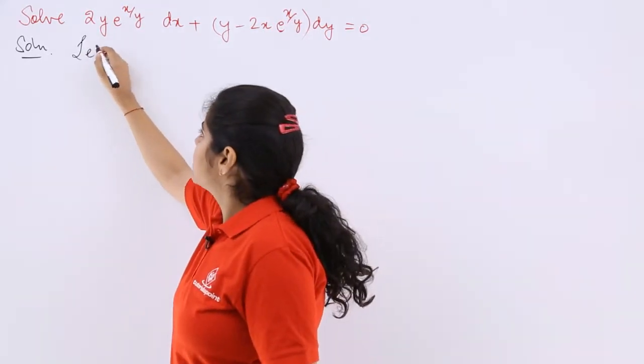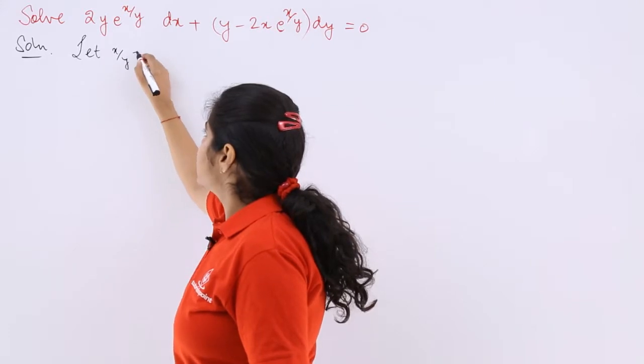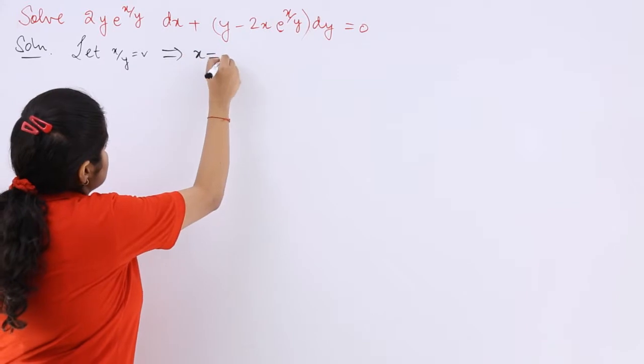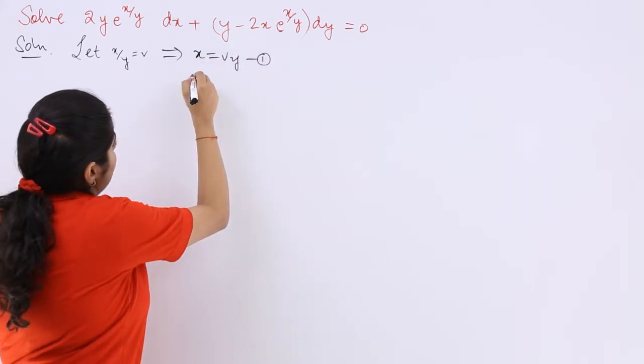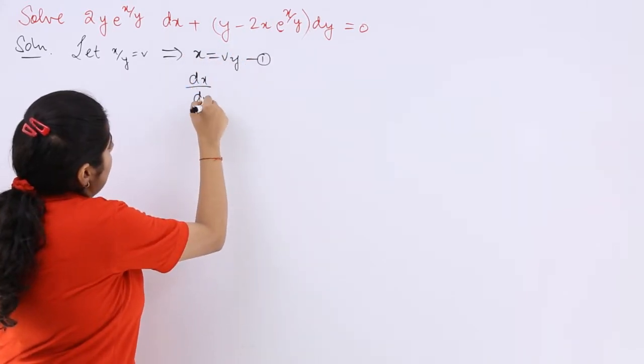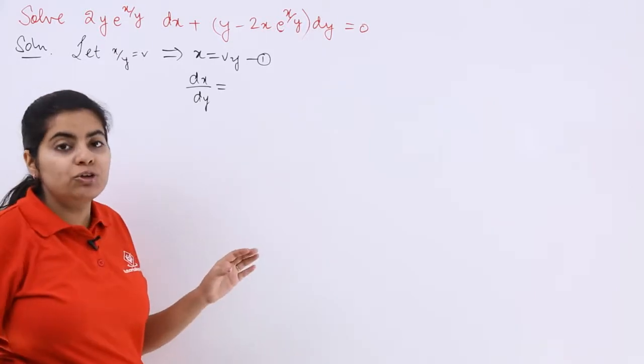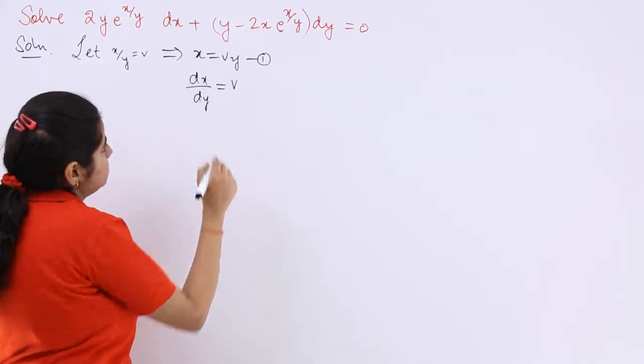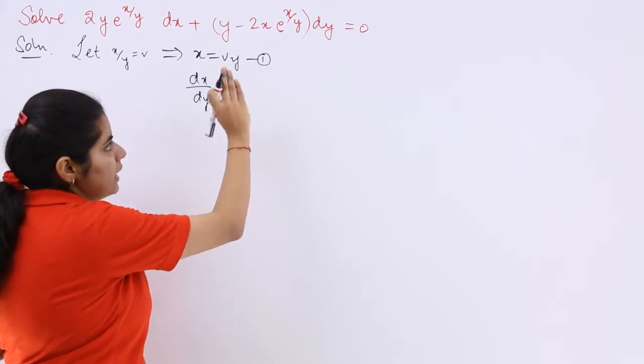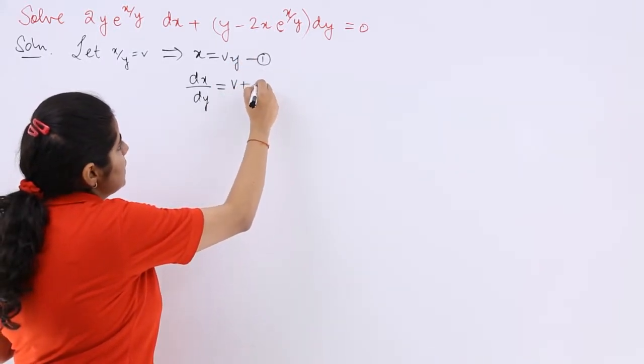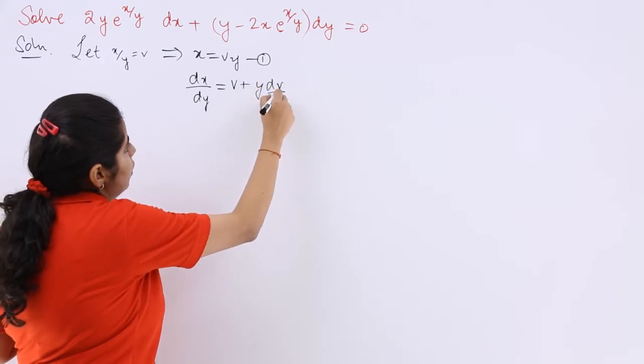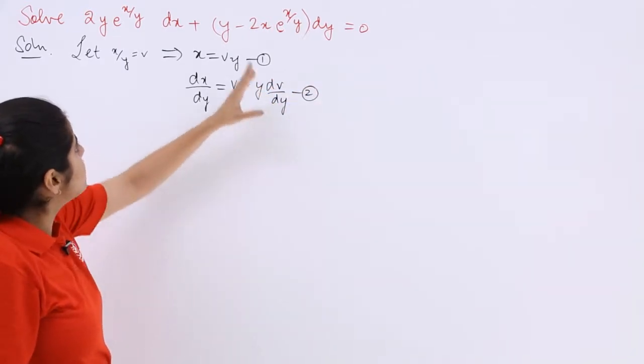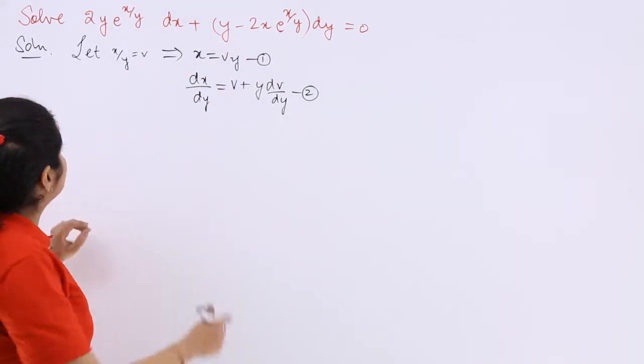So let x upon y is equal to v. If x upon y is equal to v, that implies x is equal to vy. That is equation number 1. dx upon dy is equal to what? Now you have to carefully differentiate. So first function and with respect to dy is there into differentiation of second plus second function into differentiation of first. Right? Now we have to simply put the values in the question itself.